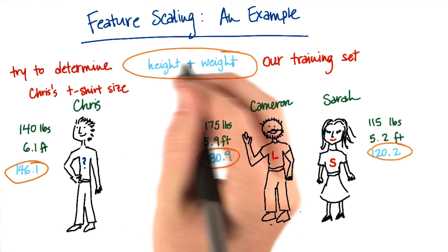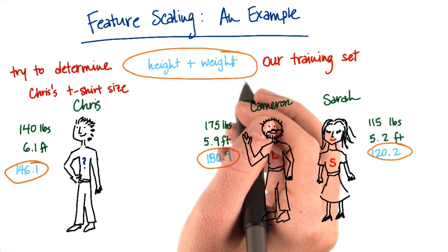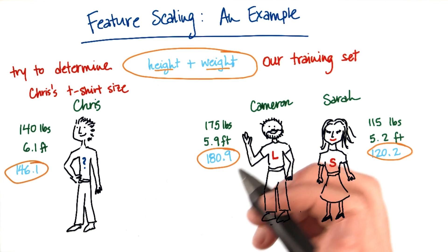Now what went wrong here is that this metric of height plus weight has two very imbalanced features in it, height and weight. So here's what I mean by that.